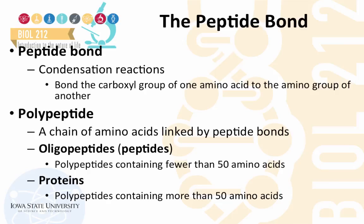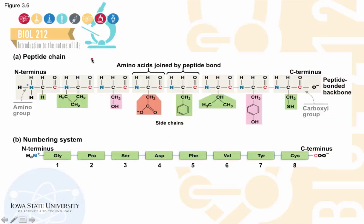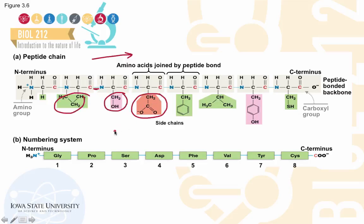The bond that connects two monomeric amino acids is called a peptide bond. This bond is formed through condensation reactions that connect the carboxyl group of one amino acid to the amino group of another, resulting in the formation of a polypeptide chain. If this polypeptide chain contains fewer than 50 amino acids, it is called an oligopeptide; if it contains more than 50 amino acids, it is called a protein. One end of the polypeptide has an amino group (positively charged), called the N-terminus, and the other end contains a carboxyl group (negatively charged), called the C-terminus.